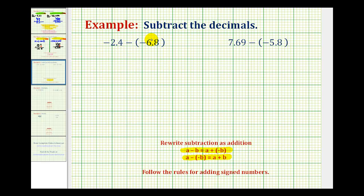Notice in this first example, we have negative 2.4 minus negative 6.8. As an addition problem, this would be negative 2.4 plus positive 6.8. So to determine this difference, we're going to find this sum, and notice how we're summing numbers with different signs.